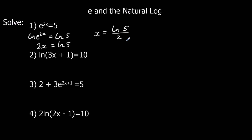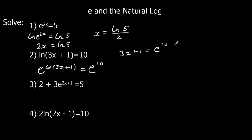Second: ln(3x + 1) = 10. We get rid of ln by applying e to both sides: e^(ln(3x + 1)) = e^10. e ln cancels, so 3x + 1 = e^10. Take 1 from both sides: 3x = e^10 - 1, then divide by 3: x = (e^10 - 1) / 3.